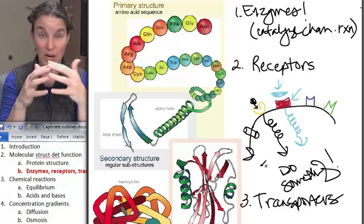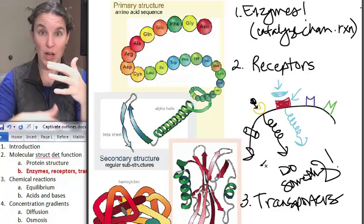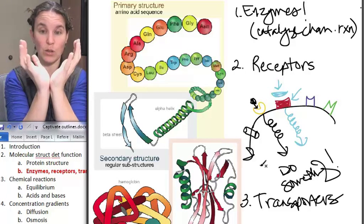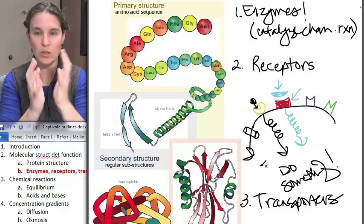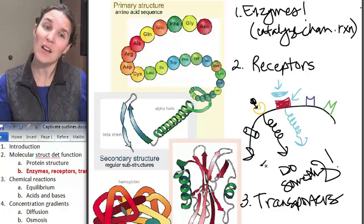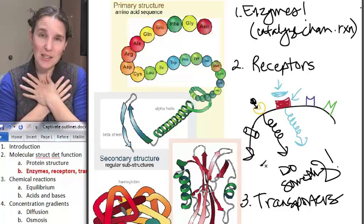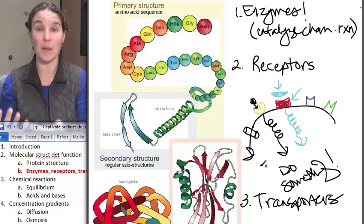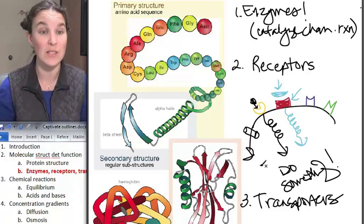Totally makes sense, right? Once the molecule falls off inside the cell, change the shape back again. Transporters get stuck back and forth. These are three fantastically important types of molecules that we will be dealing with in physio.